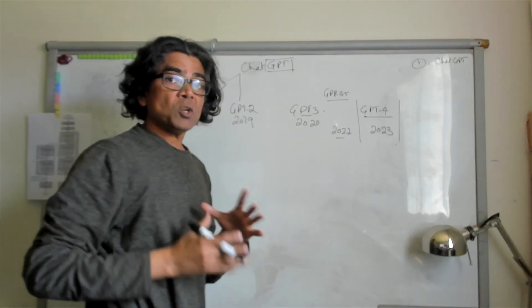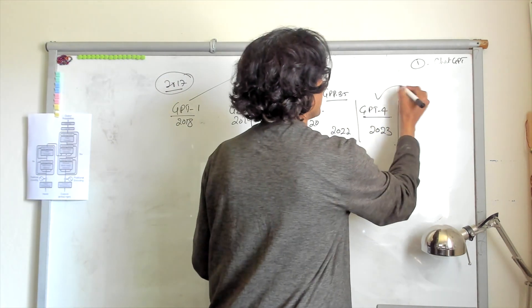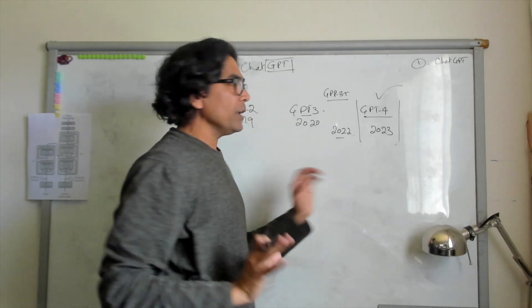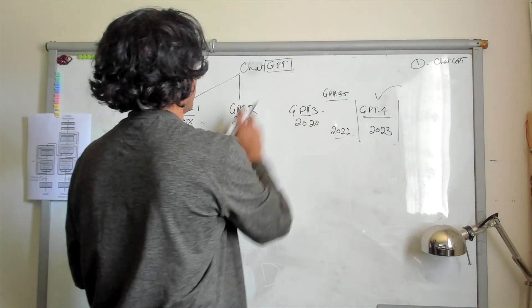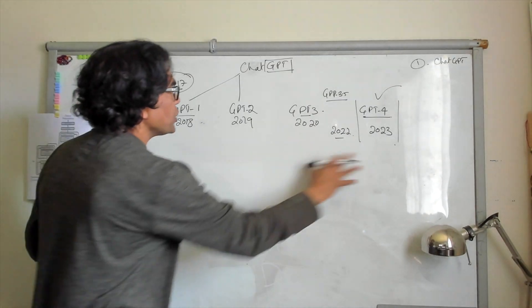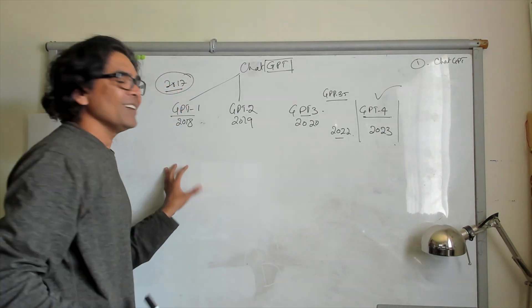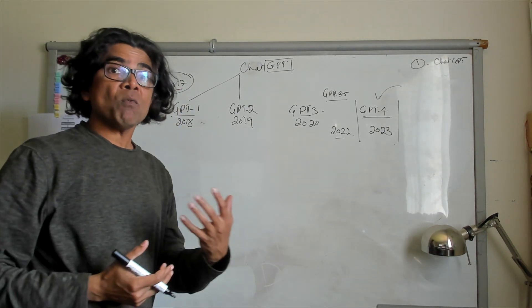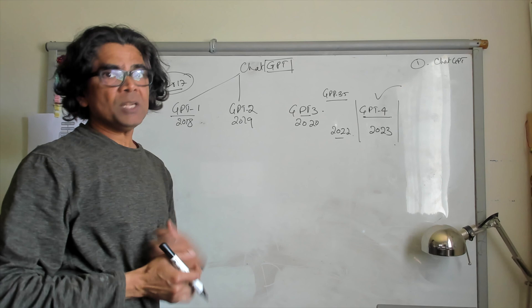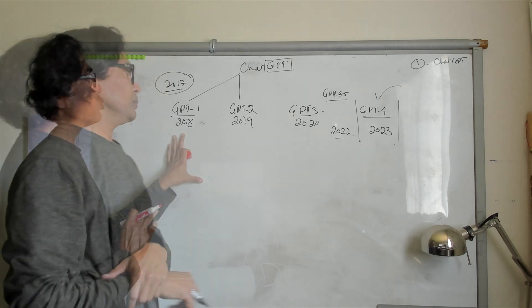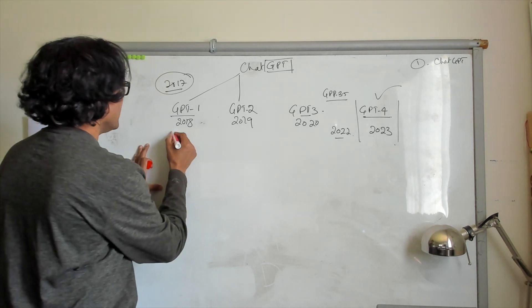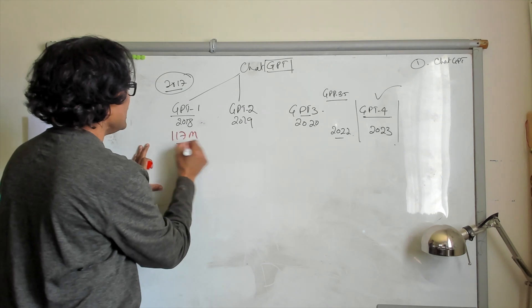If we want to understand what is available in GPT-4, there should be a specific topic already. However, in order to understand the progression of these GPT models, you can understand the power behind the ChatGPT large language model. GPT-1 actually had about 117 million parameters.